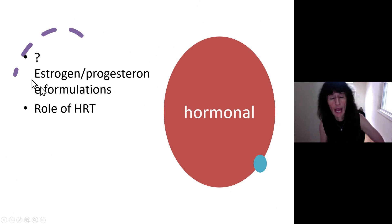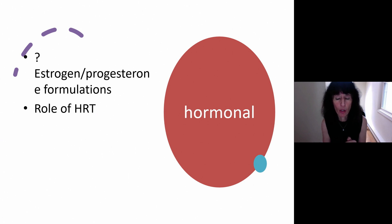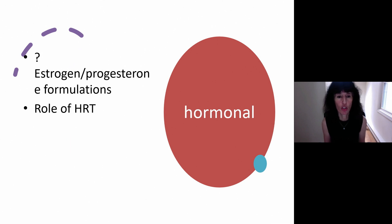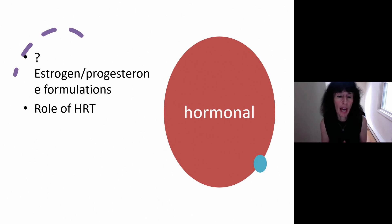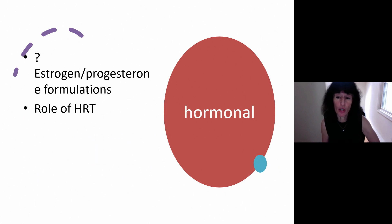Think about hormonal estrogen-progesterone formulations. For women who have menstrual migraine specifically, if you can suppress cycling they may do a lot better. However, if somebody has aura, you want to avoid this — the risk of stroke increases fairly substantially. For someone with migraine with aura, try to avoid the estrogen-progesterone formulations of oral contraceptives. Regarding HRT, there's no data to support this for postmenopausal headaches, although it anecdotally helps many women and may help with climacteric symptoms — something to consider if appropriate for other reasons.